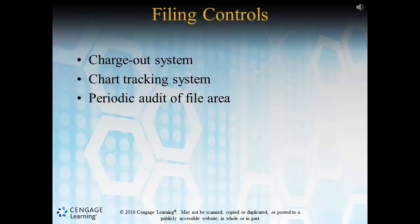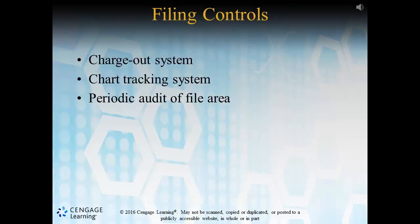There are multiple ways that records are physically transferred in a system that does not exclusively depend on electronic data capture mechanisms. A pneumatic tube transports records throughout a facility via a tunnel, not unlike those used in bank drive-thrus. A dumbwaiter is literally a small elevator that transports records from one floor to another.